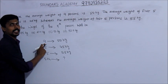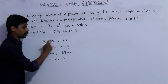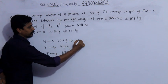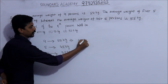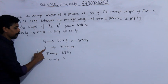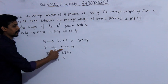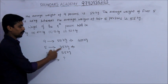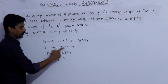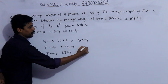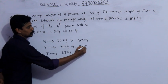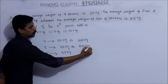The total weight of 9 persons: 9 times 50 equals 450 kg. The total weight of the first 5 persons: 5 times 45 equals 225 kg. The total weight of the last 5 persons: 5 times 55 equals 275 kg.